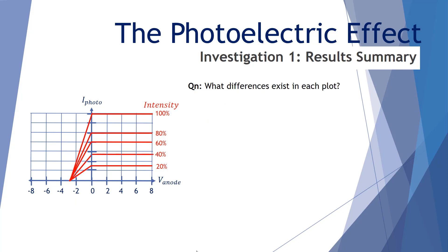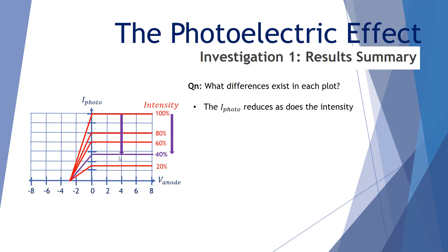What differences exist in each plot? Looking at the plots for the different intensities, the main difference is that the photocurrent reduces as does the intensity. It starts up at a value of 100% at the top of our graph. Then as it reduces to 80% light intensity, the photocurrent drops down. At 60% intensity it drops again, further reducing to 40%, and then down to 20%. So the photocurrent reduces as does the incident light intensity.